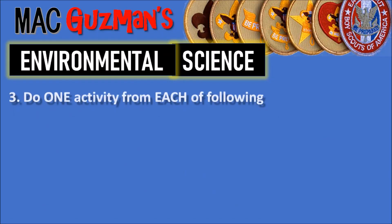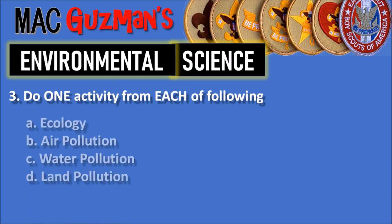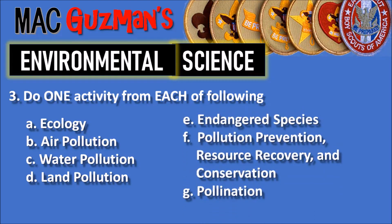Number 3 says to do one activity from each of the following: A is Ecology, B is Air Pollution, C is Water Pollution, D is Land Pollution, E is Endangered Species, F is Pollution Prevention, Resource Recovery and Conservation, and G is Pollination.